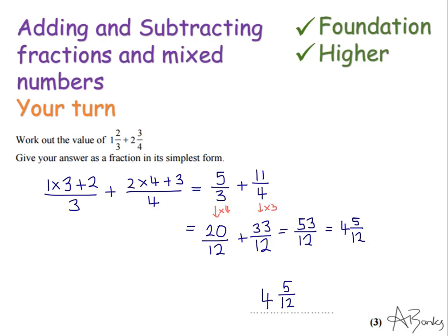So here's the full solution. So the first thing I've done is I've written them as improper fractions. You should have got 5 thirds and 11 quarters. Again, my denominator is going to be 12, my common denominator. So you get 20 twelfths add 33 twelfths. Add together your numerators. That's 53 over 12.